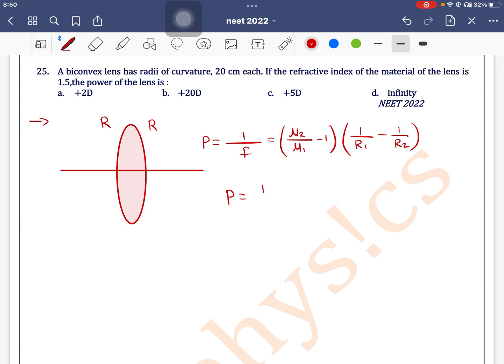Power is written as mu 2 is 1.5 divided by 1, that is refractive index of air, minus 1 into 1 by r1. For this radius in this direction is positive, so this will be plus 20 minus 1 by, for this curvature this direction will be negative, so this is minus 20.